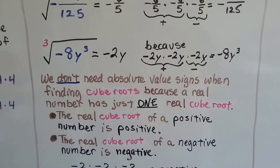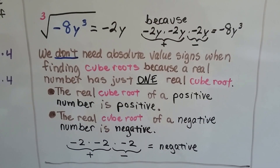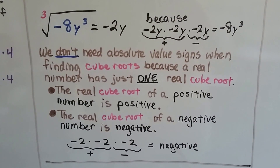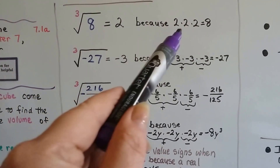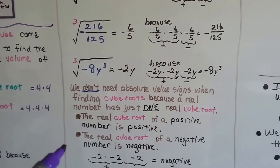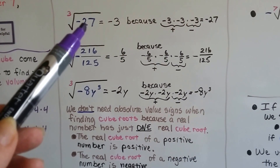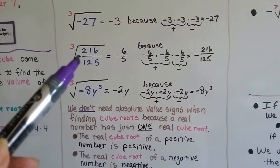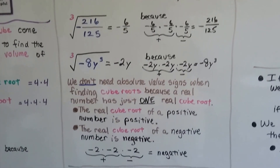We don't need absolute value signs when finding cube roots because a real number has just one real cube root. The real cube root of a positive number is positive — there's a positive 8, so that's a positive 2. And the real cube root of a negative number is negative — this was a negative, so we got negative 3. This was a negative, we got negative 6 fifths. This was a negative, we got negative 2y.